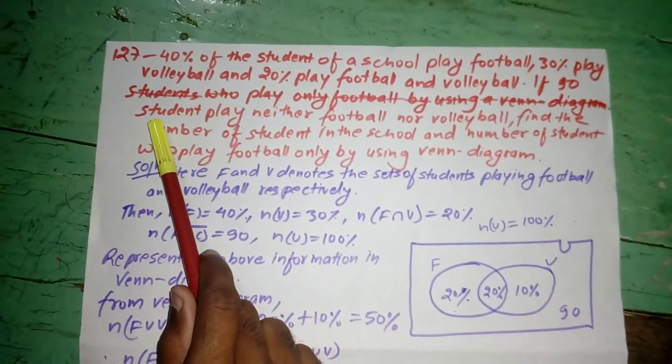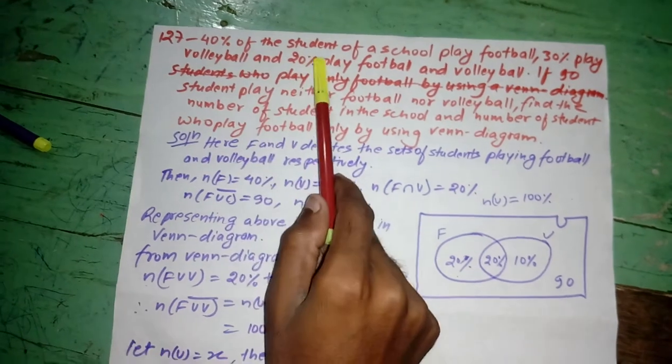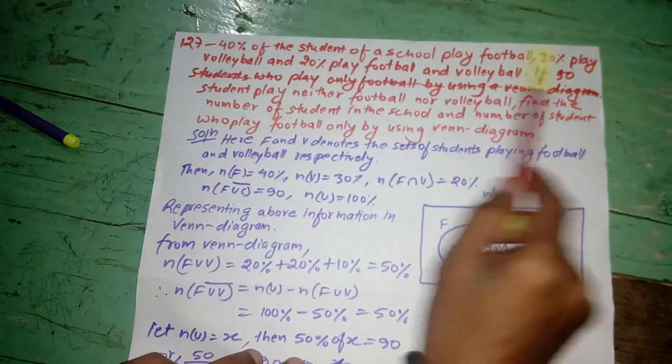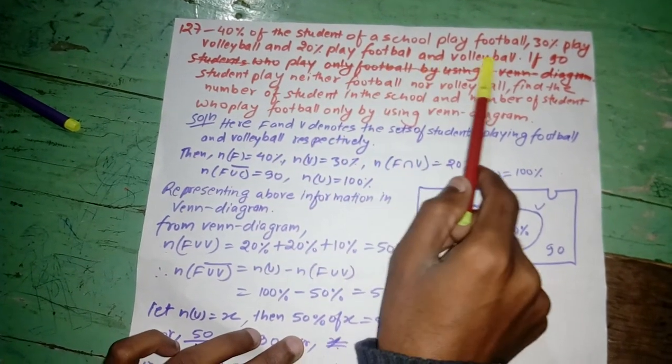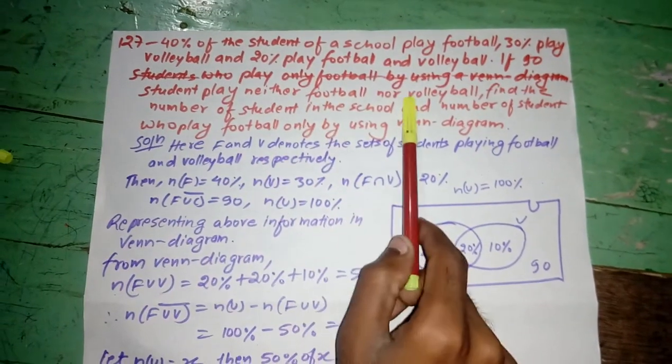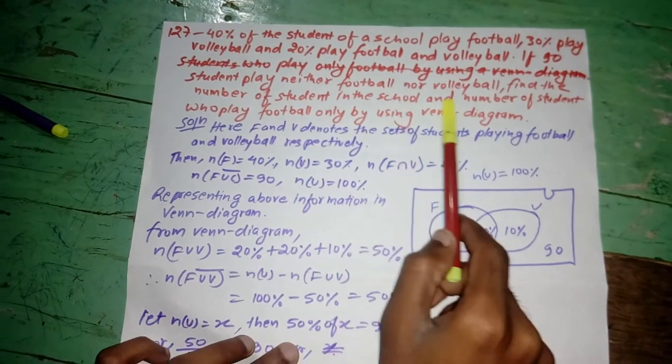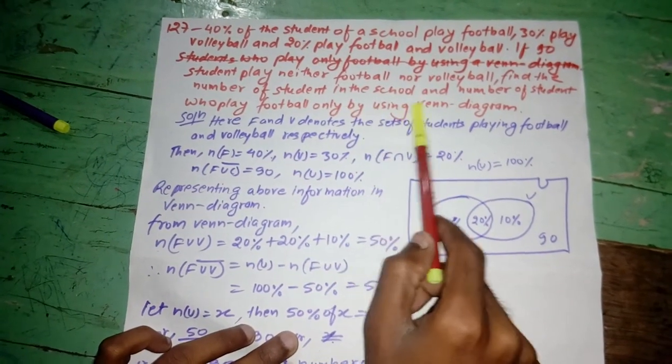Here question number 127 of Setshapran. 40% of the students of a school play football, 30% play volleyball and 20% play football and volleyball. If 90 students play neither football nor volleyball, find the number of students in the school and number of students who play football only by using Venn diagram.